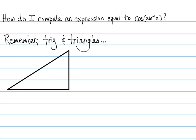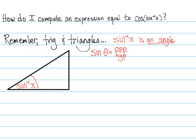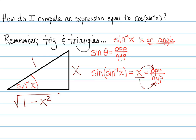Way back when we started trig, we learned about triangles with an angle in one corner and labels all the way around. Arc sine of x actually gives us an angle — trig functions eat angles and spit out values, so inverse trig functions eat values and spit out angles. Since sine inverse is an angle, we can place it in one of the corners. Sine is opposite over hypotenuse, and sine of sine inverse is x, so x equals opposite over hypotenuse. Putting x over 1, we label the opposite side x and hypotenuse 1, and using the Pythagorean theorem we get the square root of 1 minus x squared for the other side.